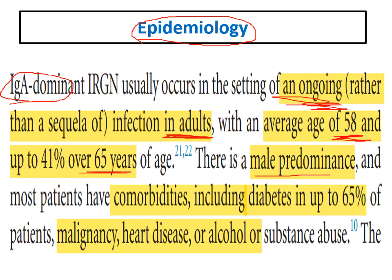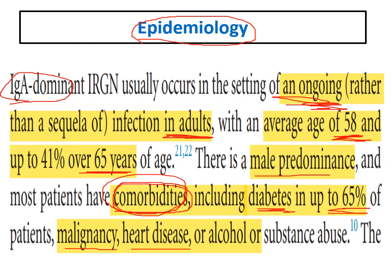In both conditions there is a slight male predominance. In IgA dominant infection-related GN, most patients have multiple comorbidities — the most common being diabetes, present in around 65% of patients. Patients may also have malignancy, heart disease, alcohol, or substance abuse. Key features: ongoing infection, elderly patients over 50 years of age, with comorbidities, especially diabetes.